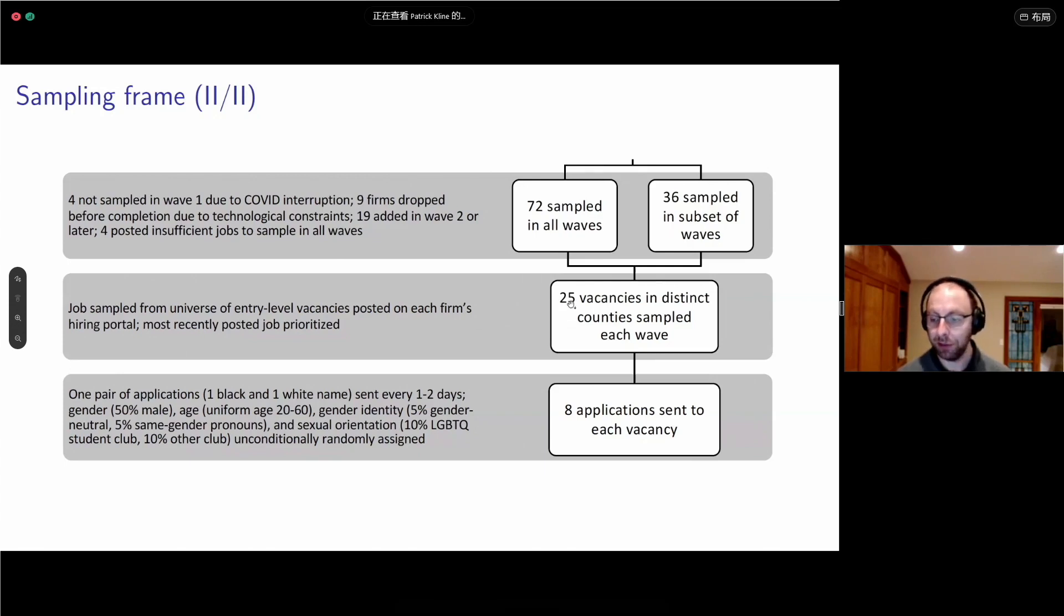We started with the Fortune 500 companies, then narrowed down to 123 firms that had sufficient flow of jobs that was nationwide. 180 of these companies turned out to have centralized job portals on company homepages that were feasible to audit. U.S. employment at these 108 firms that we were able to audit is 15 million in 2020.